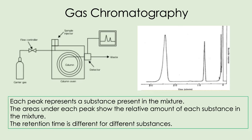Gas chromatography we've already met from C2.1. Each peak in the chromatogram represents a substance present in the mixture. Looking at the chromatogram on the right, it has three peaks — however many peaks there are, that's how many substances are present. The area under the peak shows how much of each substance there is, and the retention time on the x-axis is different for different substances.